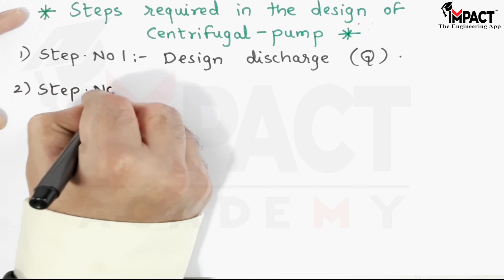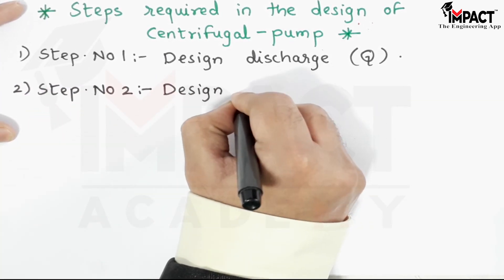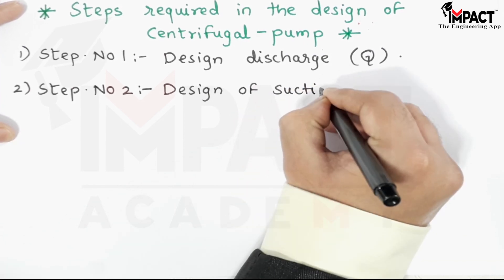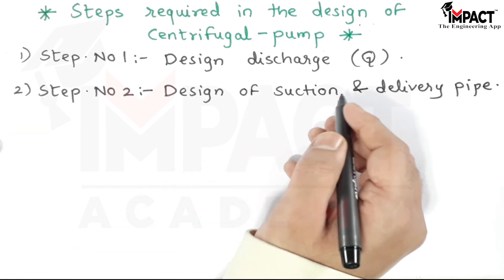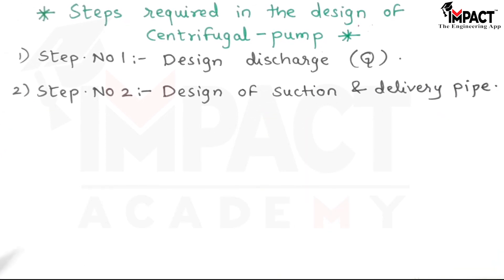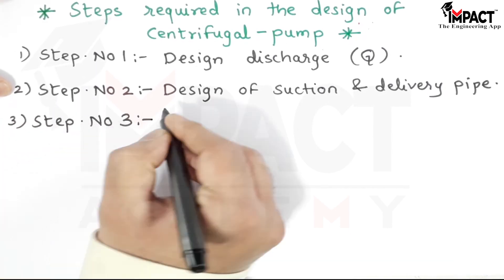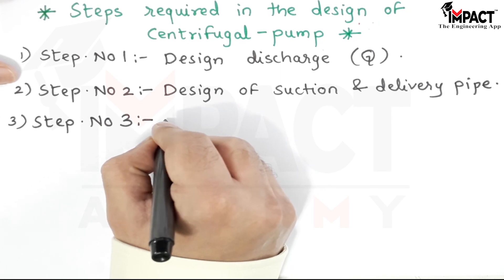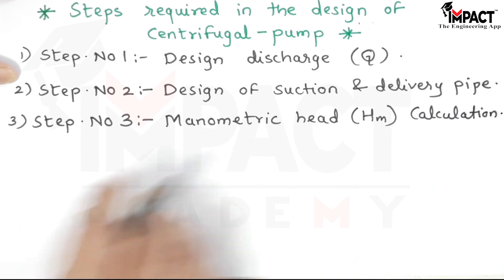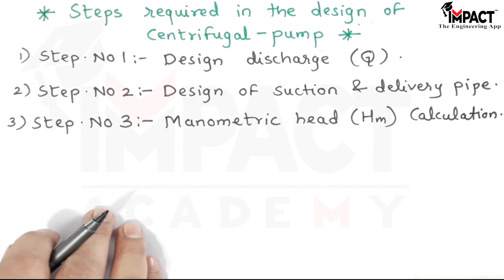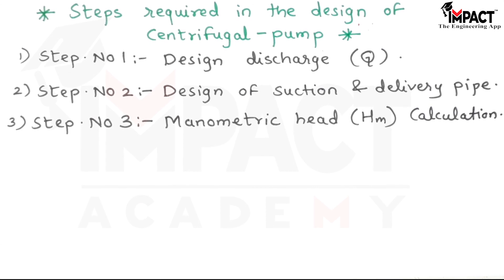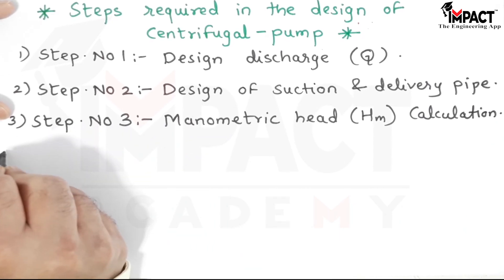Step two is the design of suction and delivery pipes — we fix the diameter as well as the velocity at which water flows in both pipes. Step three is calculating the manometric head, which is the total resistance the centrifugal pump must overcome to lift water from the sump up to the tank.